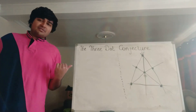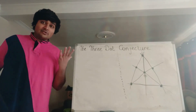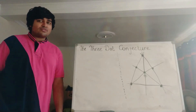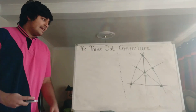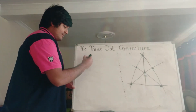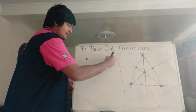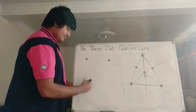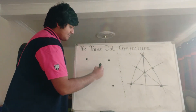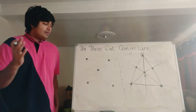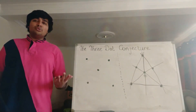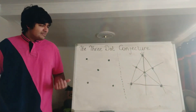Let me state what this conjecture is first and then I'll get into the solution. Basically, we take a bunch of dots on, say, the xy plane. It doesn't matter where they are. The only thing we must have is that not all the dots lie on the same straight line. That's clearly the case with these dots here.